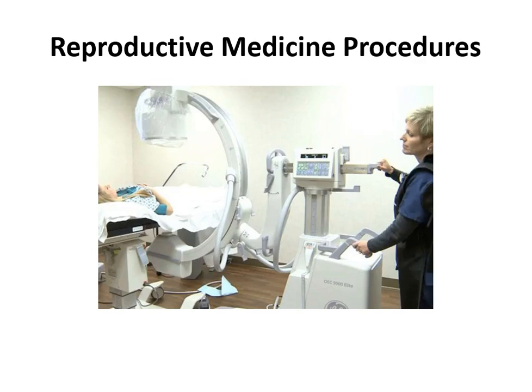On page 621, we have reproductive medicine procedures. This is where you'll see artificial insemination, culture of eggs and embryos, preparation of embryos, and different types of identification techniques. Page 622 also includes procedure codes for insemination of oocytes.